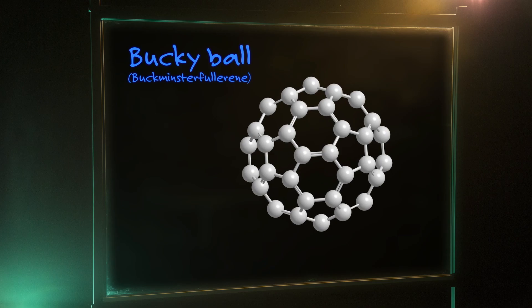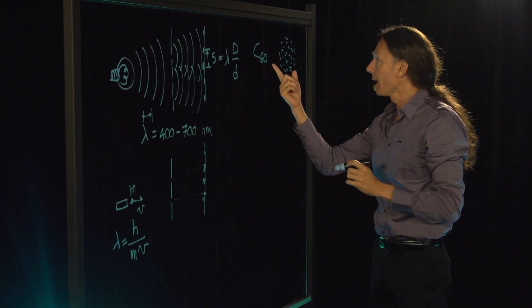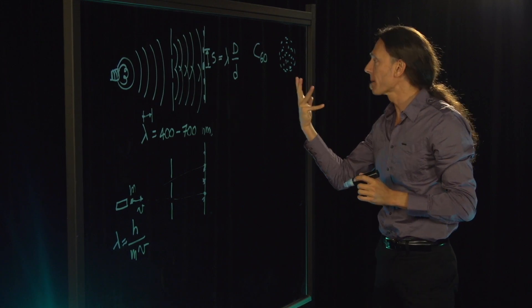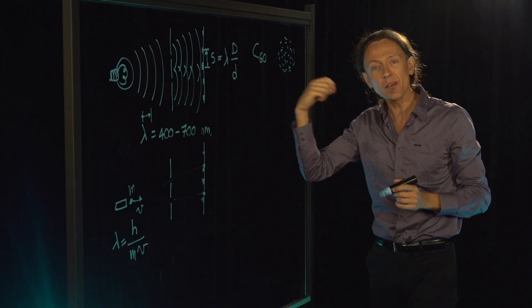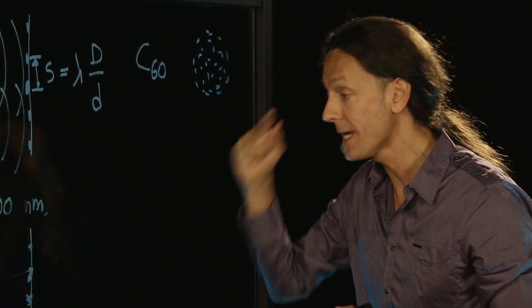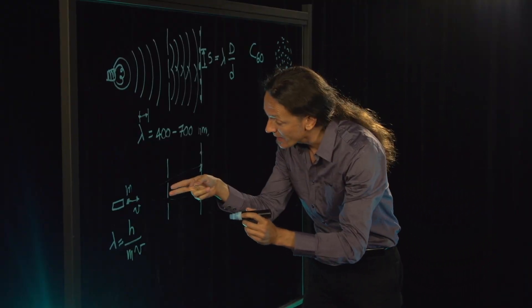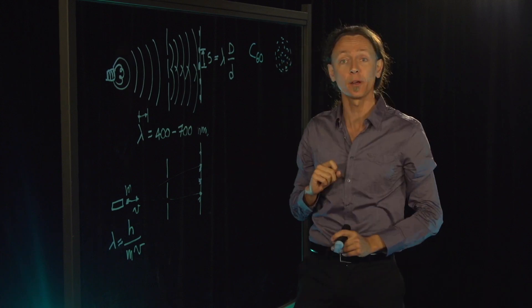It's called a buckyball because it looks like a soccer ball. It's got six carbon atoms in a pattern that reminds of a soccer ball. And this is a molecule that has an atomic mass unit of 720. So it has 720 protons and neutrons. It's a fairly large and fairly heavy molecule. And yet, if you make this distance very small and this distance fairly large, you can still see the interference pattern.